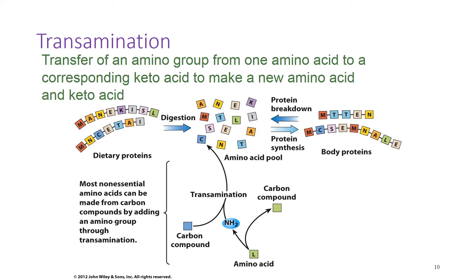The essential amino acids are those that cannot be made by the body in sufficient amounts. The non-essential amino acids are made by transamination — the process by which an amino group from one amino acid is transferred to a carbon compound to form a new amino acid. By transferring an amino group from one amino acid to its corresponding keto acid, cells can make a new amino acid and a new keto acid. This is called transamination.